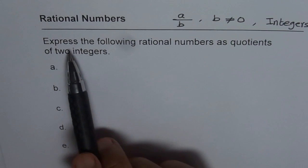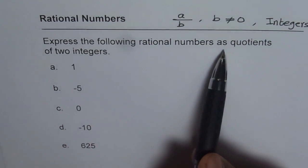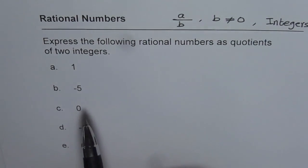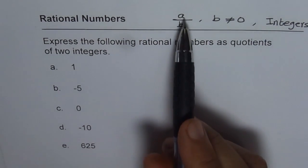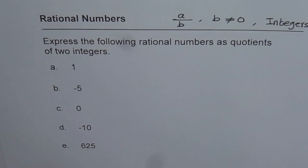When we say express the following rational numbers as quotients of two integers, that means we have to write them in fraction form with A and B both as integers. Integers are positive or negative whole numbers including 0, but the denominator cannot be 0.